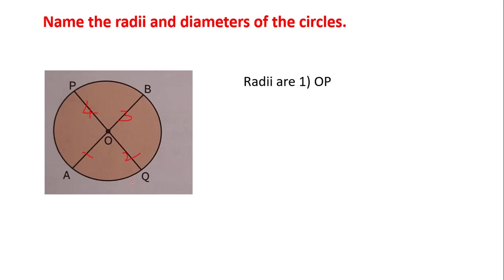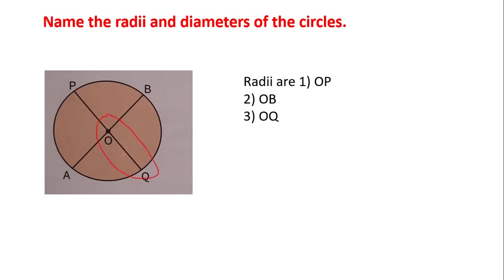The radii are: OP, because one endpoint P lies on the circle and O lies on the center. Next, OB — O is at center, B on the circle. Same way, OQ — O is at center, Q on the circle, so OQ is a radius. And last, OA — endpoint A lies on the circle and O lies on the center of the circle, so OA is also a radius.